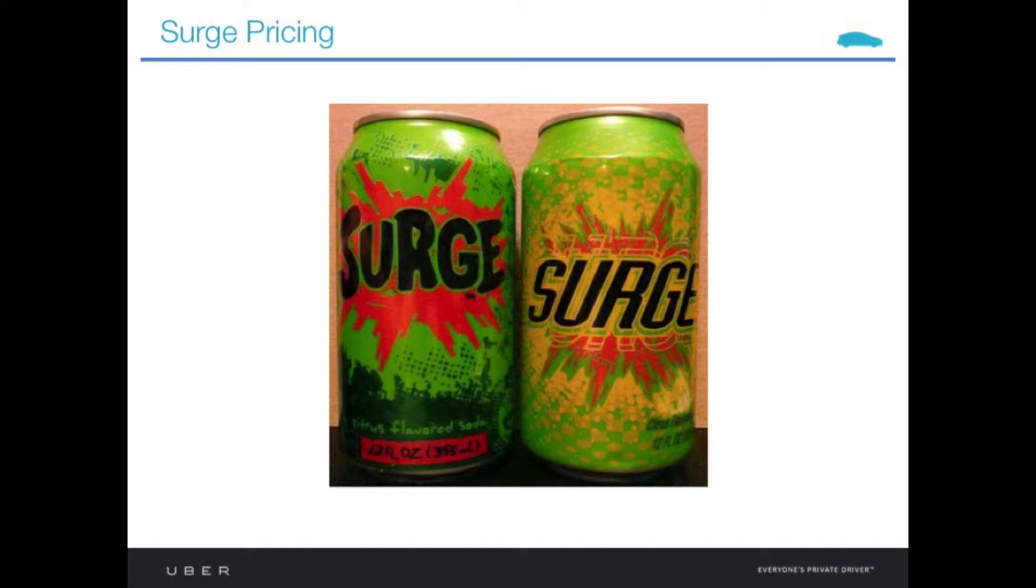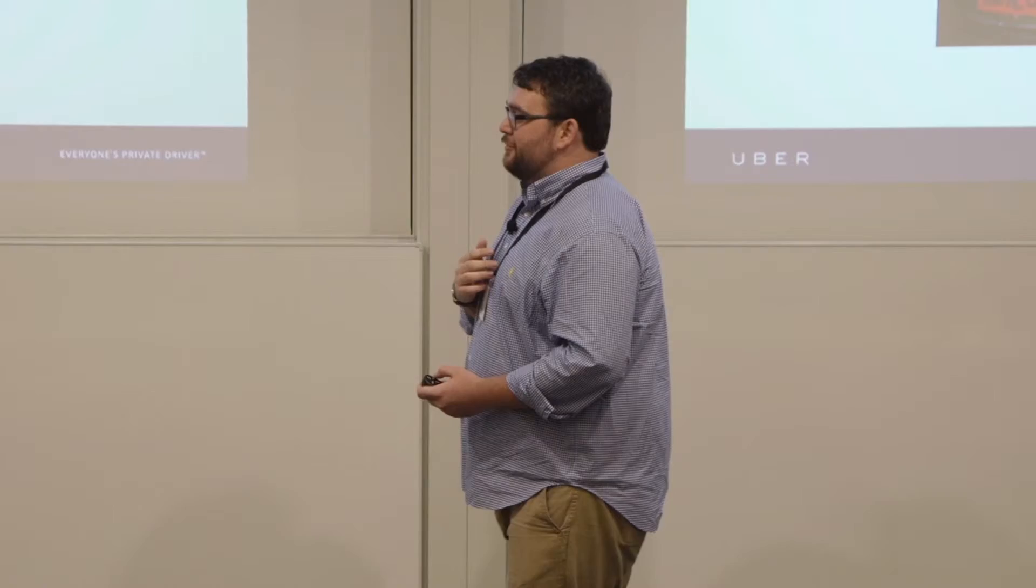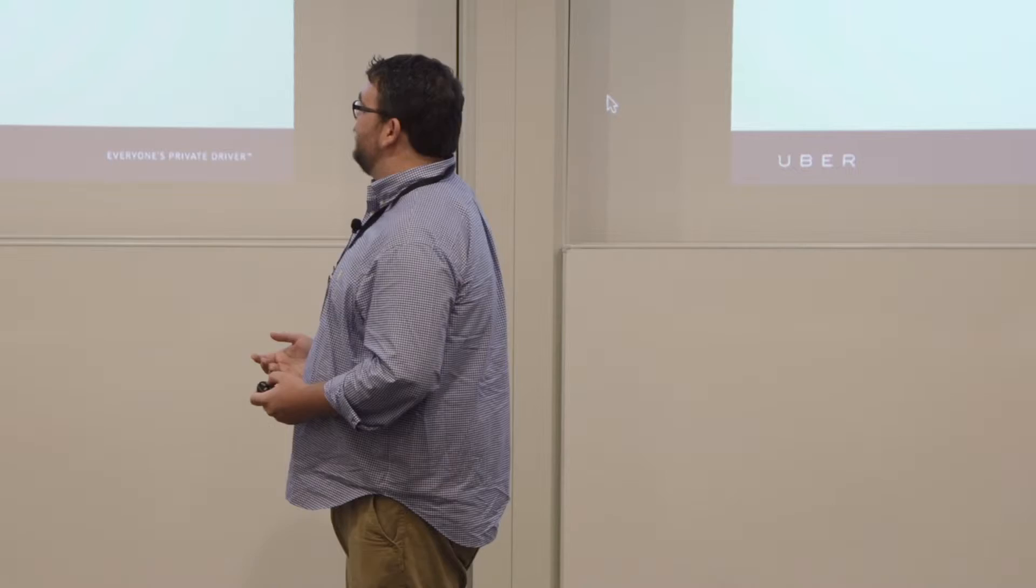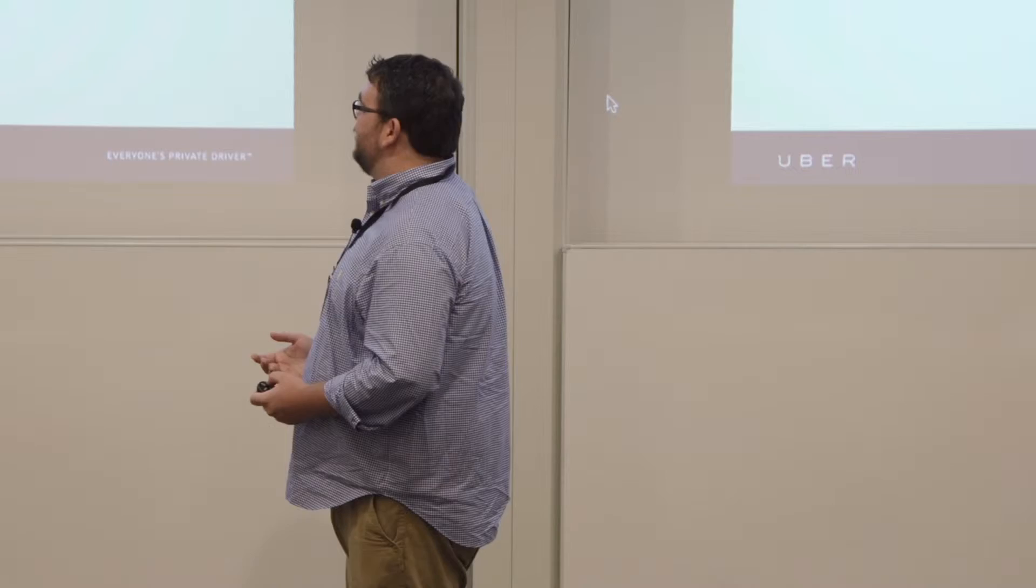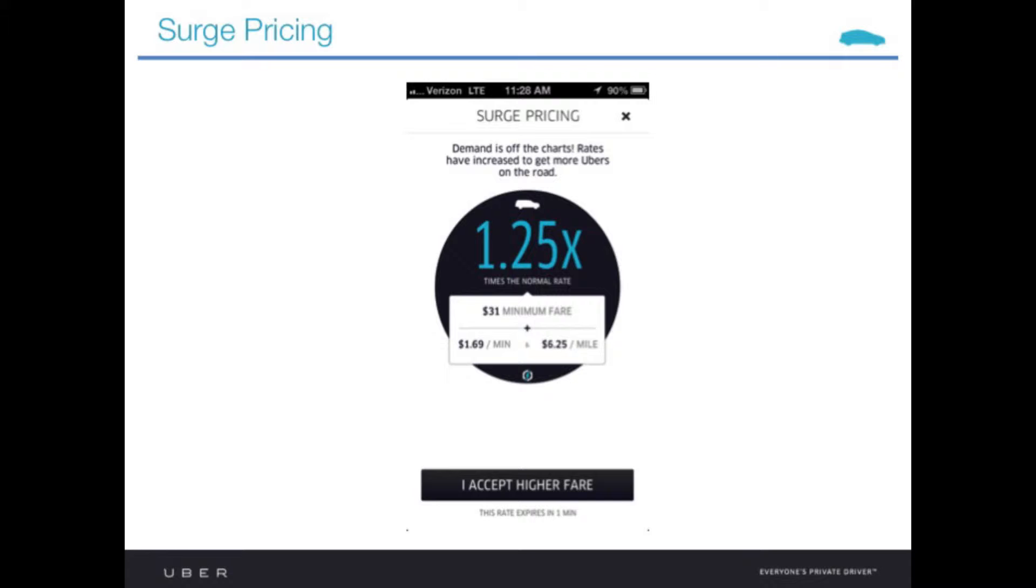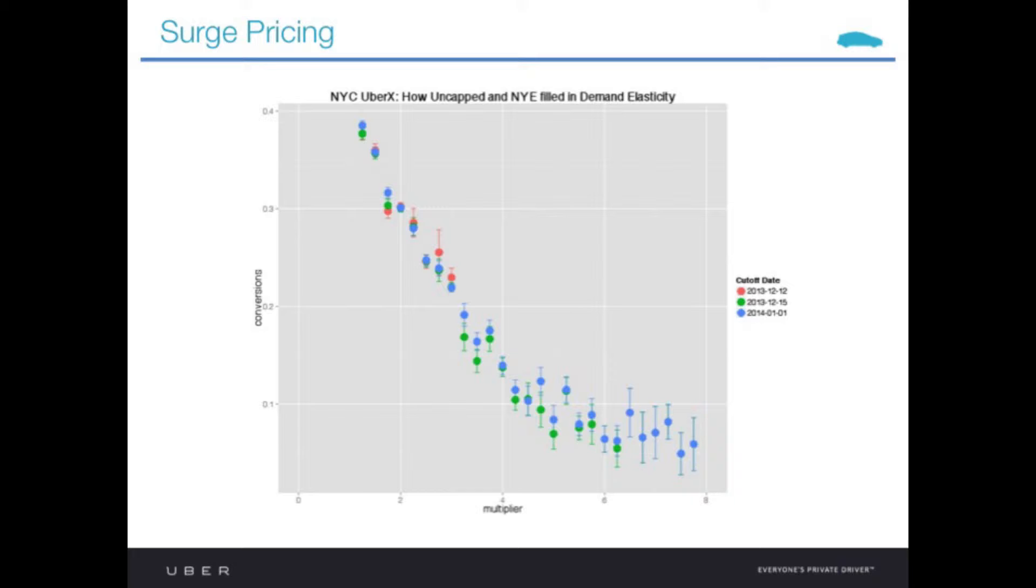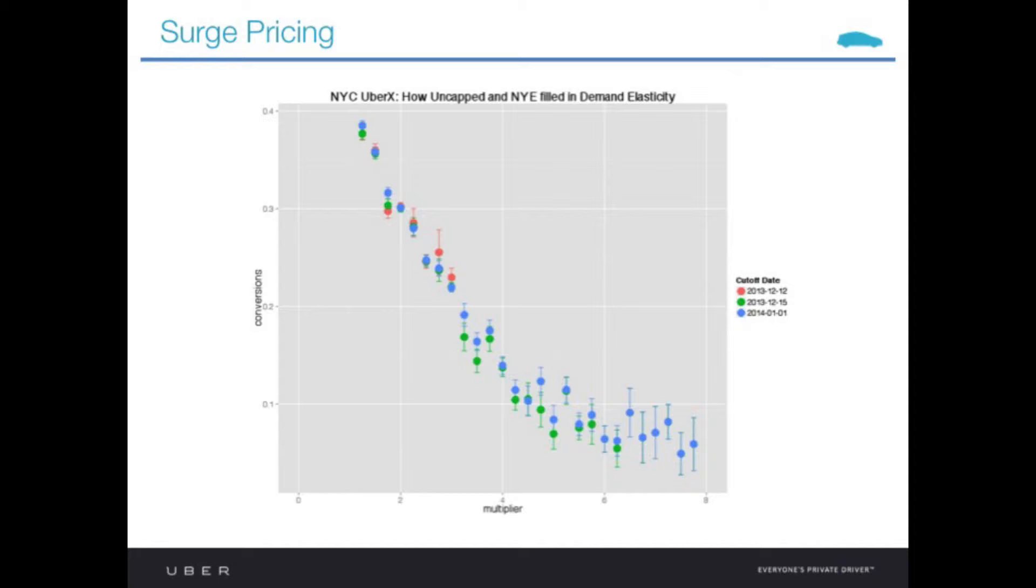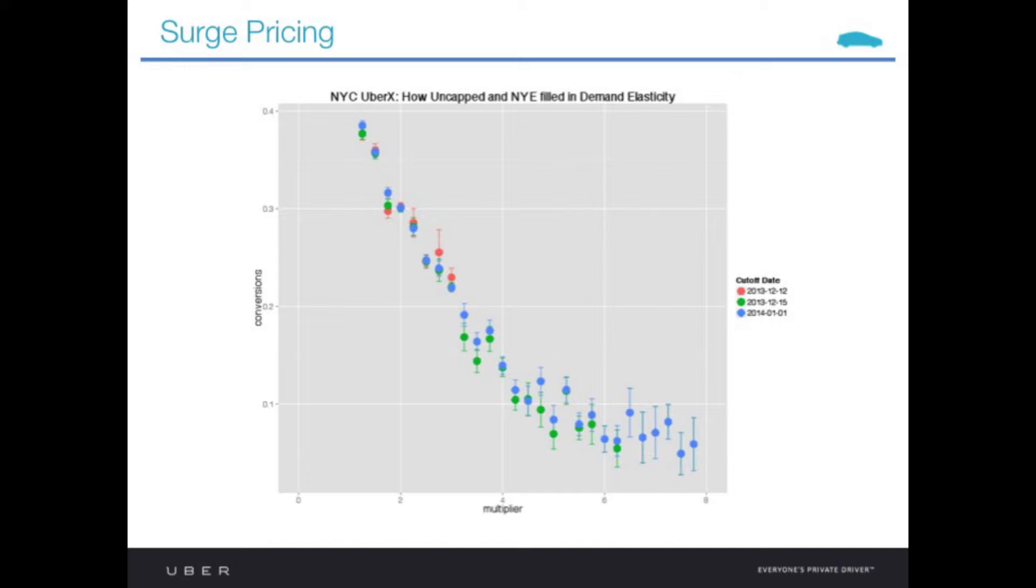Surge pricing. I ran this project personally for about a year and a half, near and dear to my heart. For those of you who have ridden Uber, you've probably seen a screen like this once or twice before. One of the interesting things about this from an economics perspective is this is probably one of the purest examples of how you can measure a customer's price elasticity live on the fly. What you're looking at here is the conversion rate on the surge screen as a function of price multiplier.